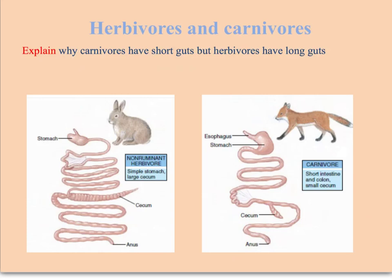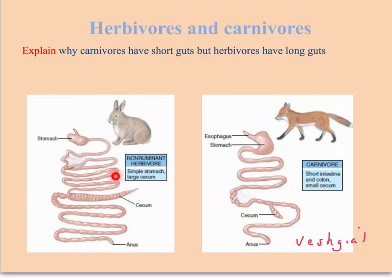Now we're going to look at adaptations for a herbivorous or carnivorous diet. The first thing you'll notice is that the herbivore's gut is really long with this enormous structure — the appendix and caecum — whereas the carnivore's gut is relatively short, and the appendix and caecum have been reduced to what we call a vestigial organ, which is basically redundant and doesn't really do anything anymore, reflecting its carnivorous diet. The herbivore has a long gut because cellulose is so difficult to digest. Note that this is a non-ruminant herbivore — we'll come back to ruminants in a second.